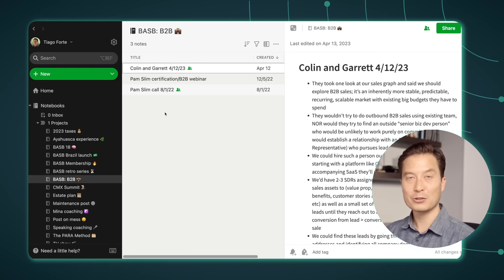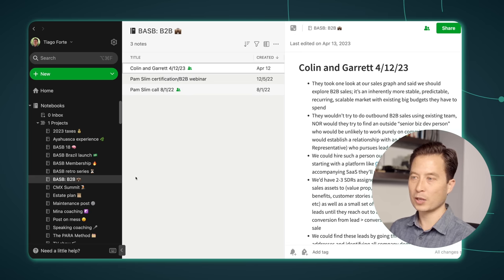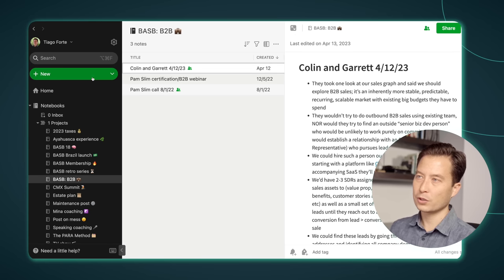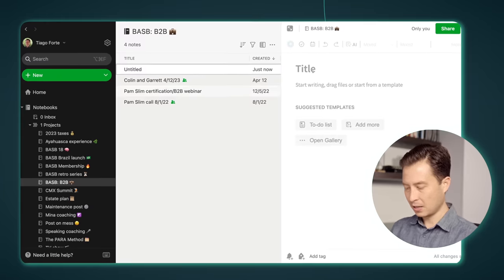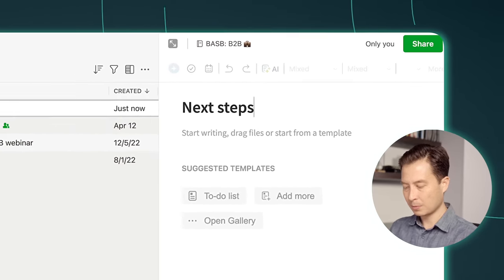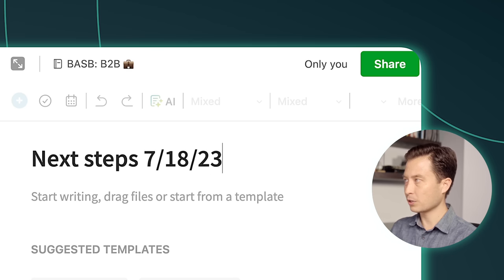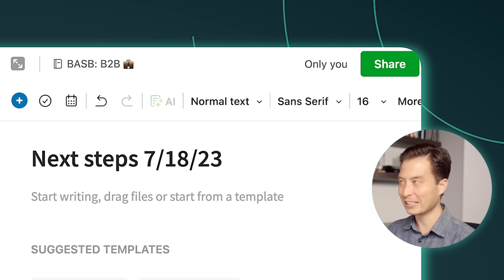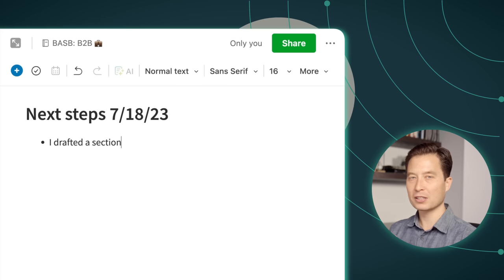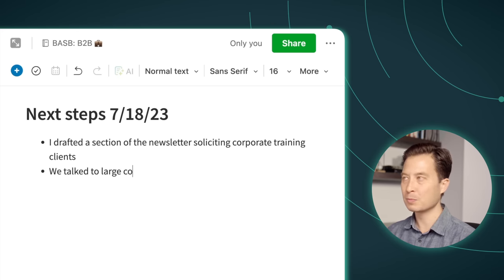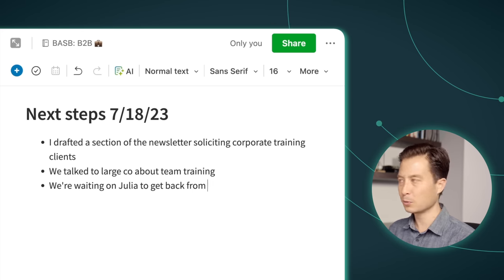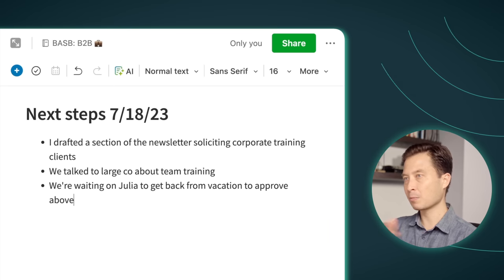Let's look at an example of how to do a Hemingway Bridge. One of my other important projects this week is a B2B initiative. We're talking to several organizations and companies about how to bring building a second brain into their companies. So what I'm going to do is create a new note in this project folder and simply call it next steps. Sometimes I also like to put the date, and that is July 18th, 2023, so I know when this Hemingway Bridge was created. Then I'm going to create bullet points and just jot down a few sort of status updates. What has been done? What has been moved forward on this in the past week or two? Not super extensive. This really shouldn't be long.